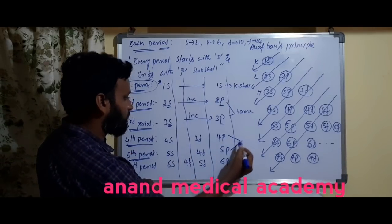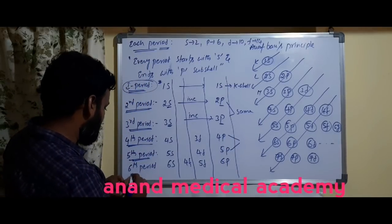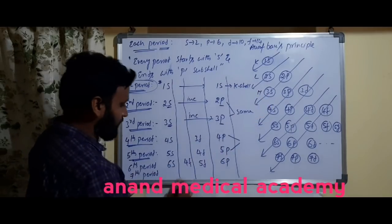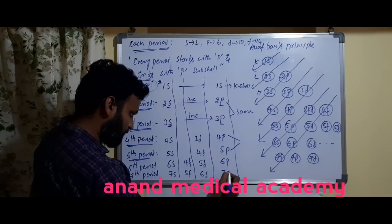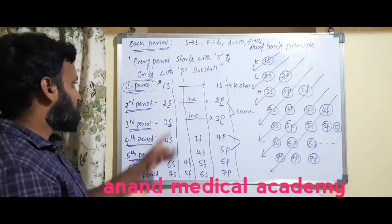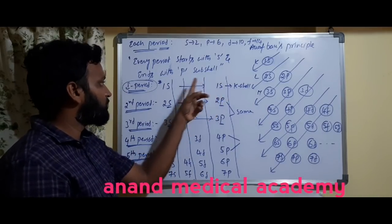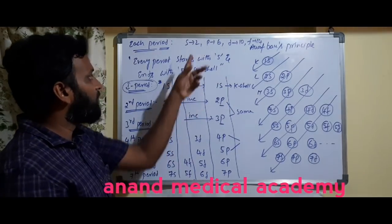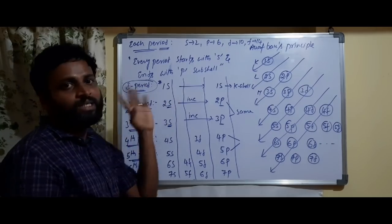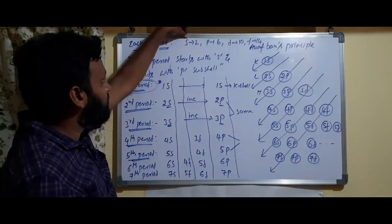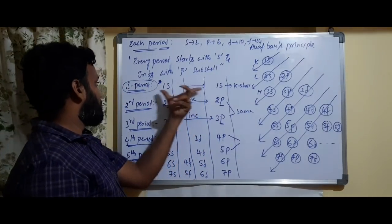The seventh period follows: 7s → 5f → 6d → 7p. The first period starts with hydrogen (1s¹) and ends with helium (1s²). S sub-shell can have maximum 2 electrons, so 2 elements are present in the first period. The second period starts with lithium (1s² 2s¹) and ends with neon (2s² 2p⁶). S can hold 2 electrons and P can hold 6, giving 8 elements in the second period.